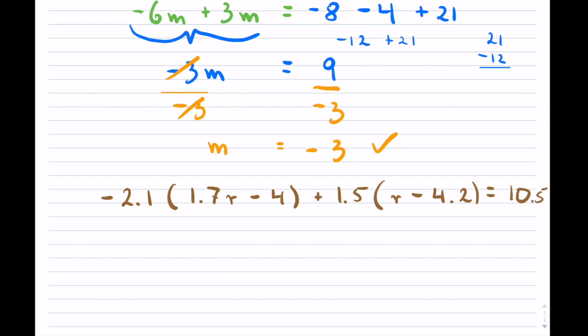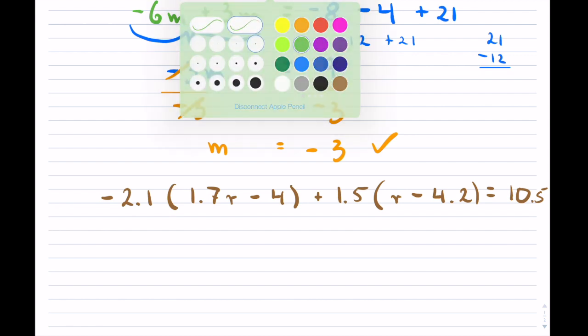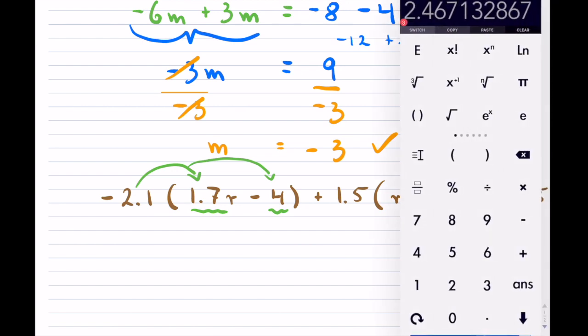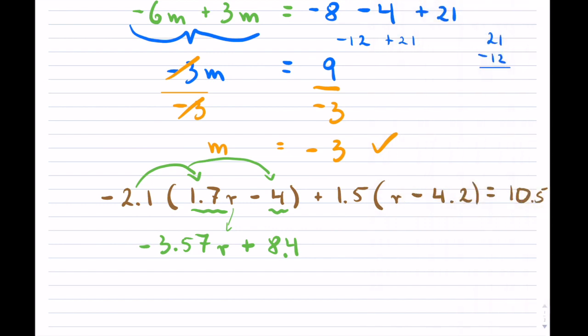So first, I'm not going to solve this entire thing, but the key point is brackets. Let's get rid of them. So I will take, so first, multiply, don't forget, you have two terms. If you have three terms, you would have to multiply three times. So that's what we have to do first, so I'll take out the calculator. So we have negative 2.1 multiplied by 1.7, and we get negative 3.57r, so the r just stays. The negative and the negative actually is going to be positive. So this is going to be positive, and it is, so 2.1 times 4 is 8.4. So that's my first bracket,